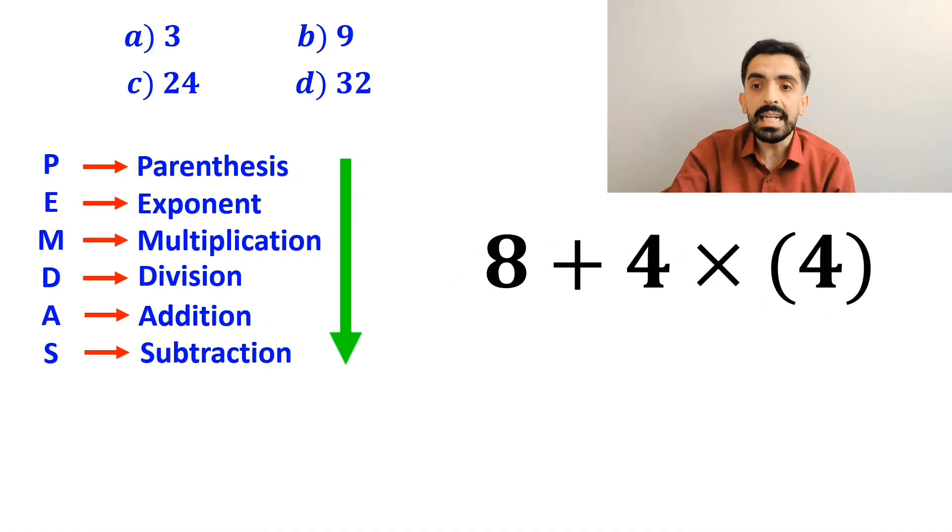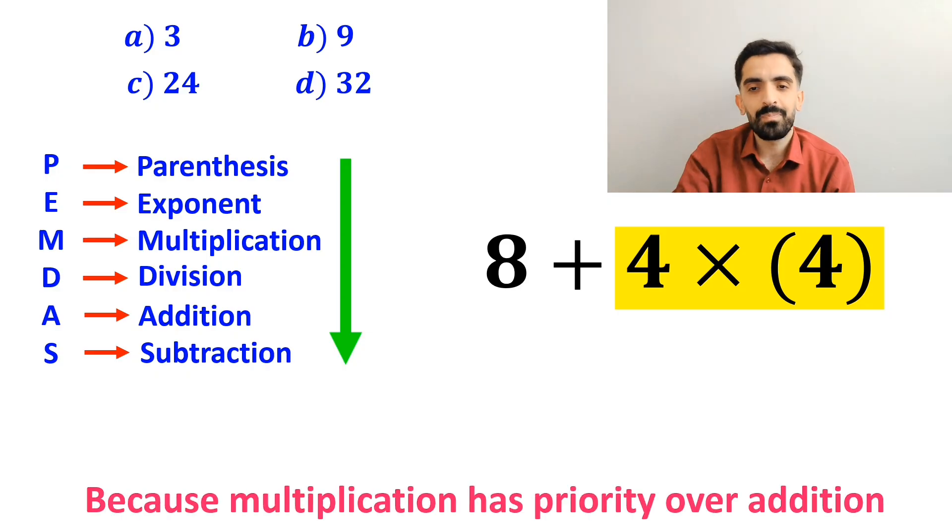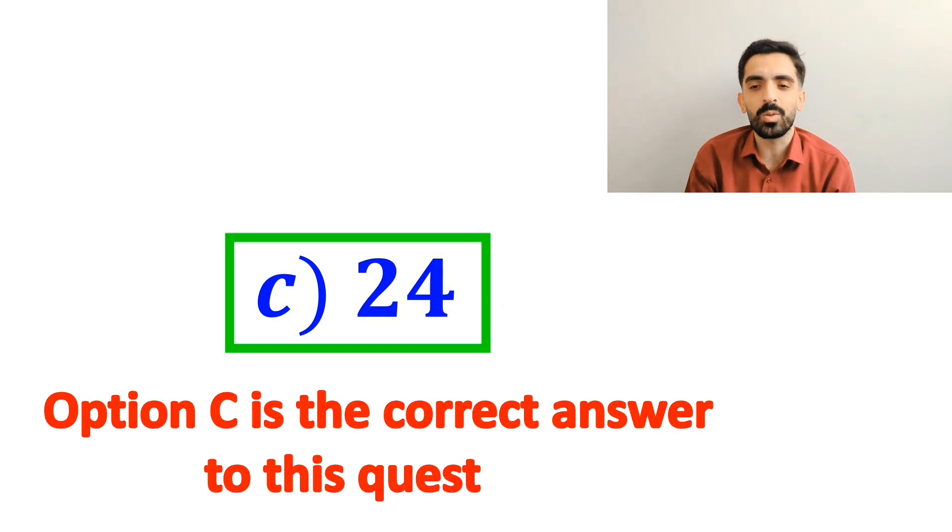In the next step, it's time for the multiplication between the 4s, because multiplication has priority over addition. So, instead of this expression, we can write 8 plus 16, which ultimately gives us the answer 24. Therefore, option C is the correct answer to this question.